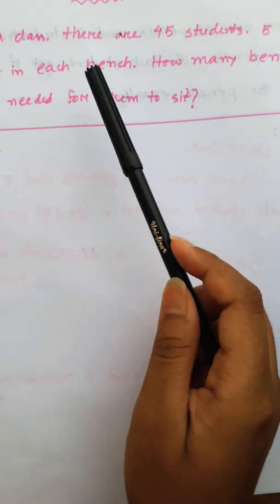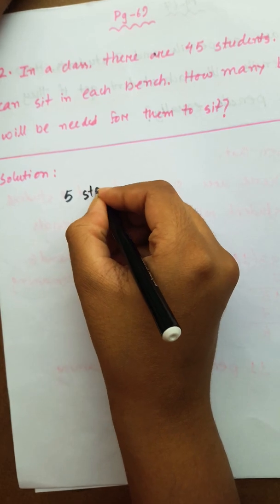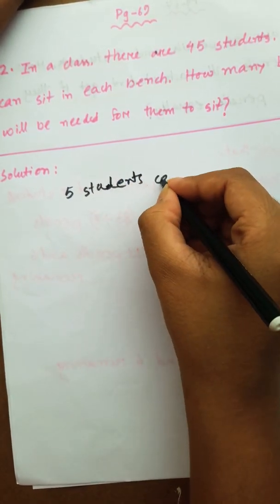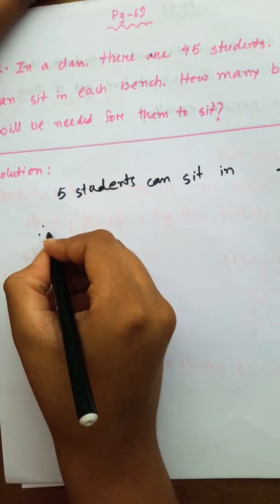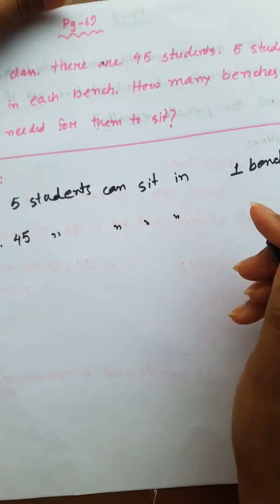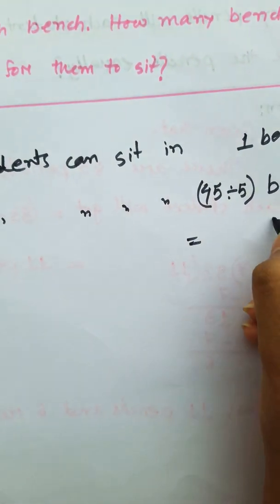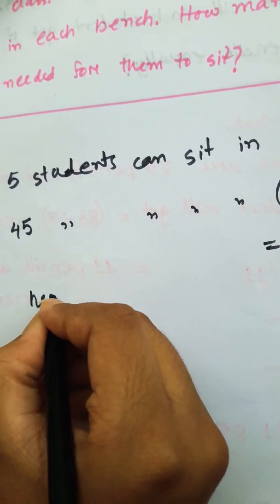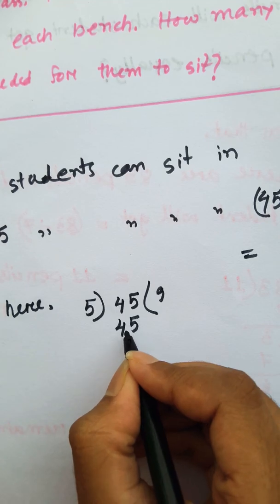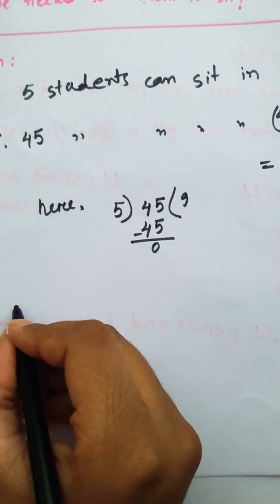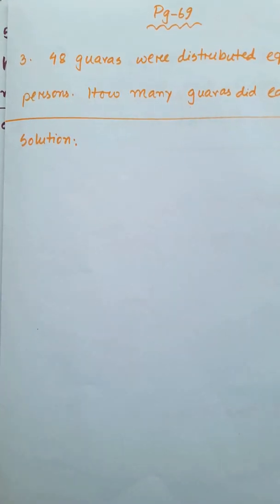There are 45 students. 5 students can sit in each bench. Next method.